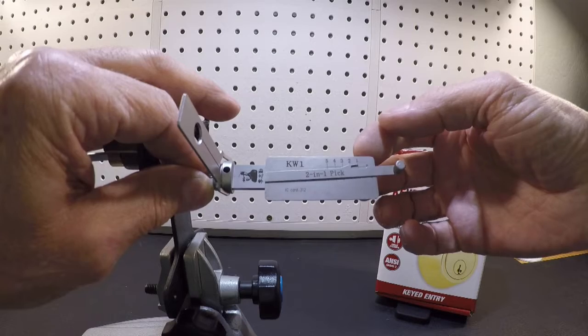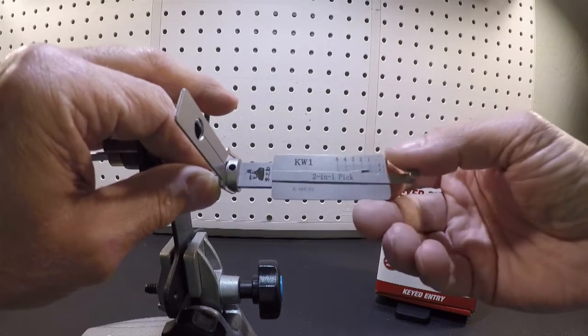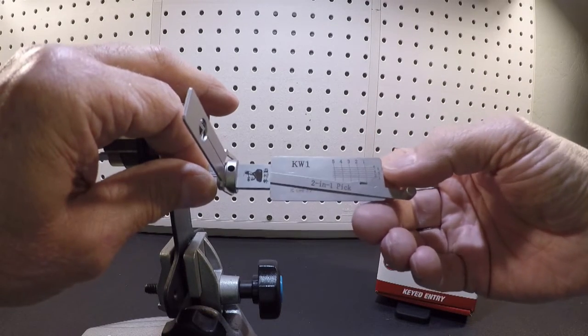The KW1 locking system features five cuts and six depths, as you can see from the reading panel.